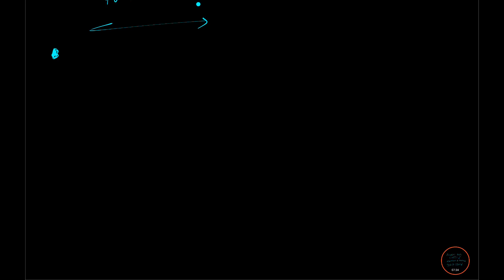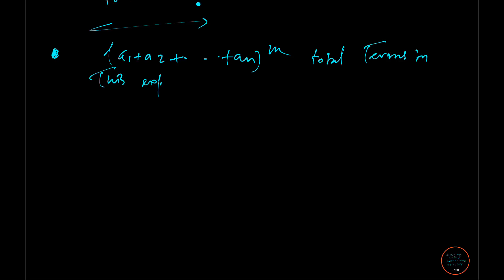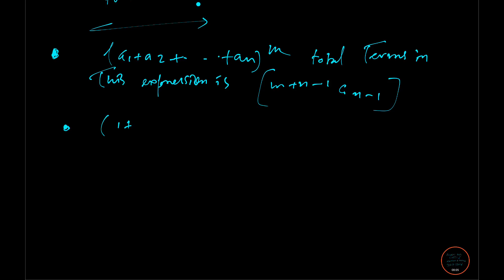Another trick: for an expression (a₁ + a₂ + ... + aₙ)^m, the total number of terms is C(m+n−1, n−1). Remember this — it is a very precious formula. However, if the expression is of the same variable, like (1 + x + x² + ... + xⁿ)^m, then the total number of terms is simply mn + 1. You can verify this with two or three examples.